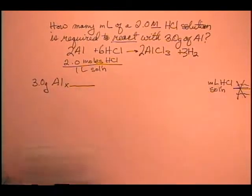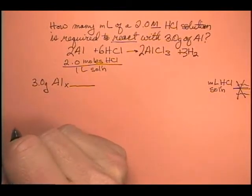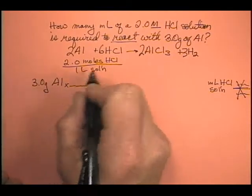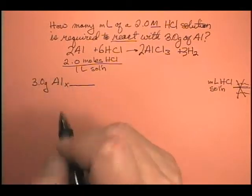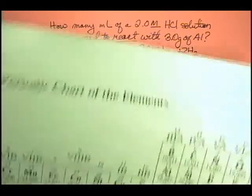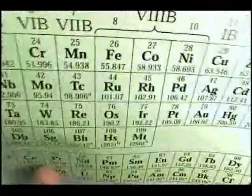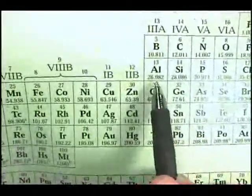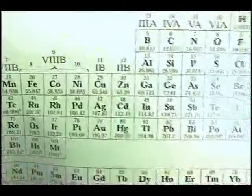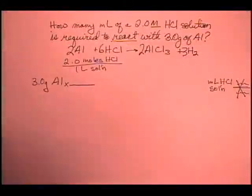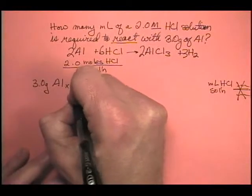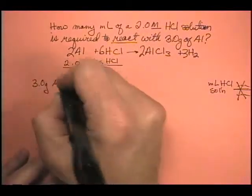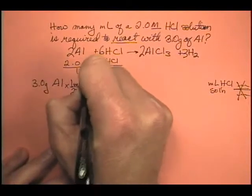Well, the only way I'm going to get from aluminum to HCl is with a mole-to-mole ratio. It's got to have it. So my first job is to figure out how many moles of aluminum. Well, I need the molar mass of aluminum. Where am I going to find it? My handy-dandy periodic table. Aluminum, 26.982 grams. I'm going to call it 27.0. 27.0 grams of aluminum. I need that on the bottom. It's 1 mole of aluminum.